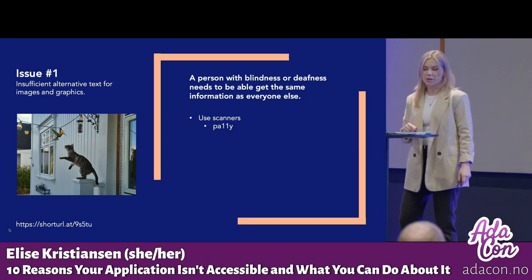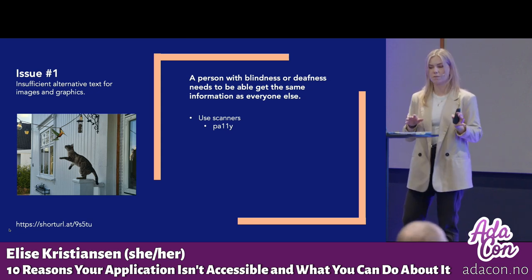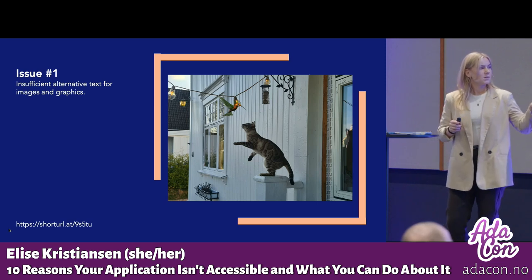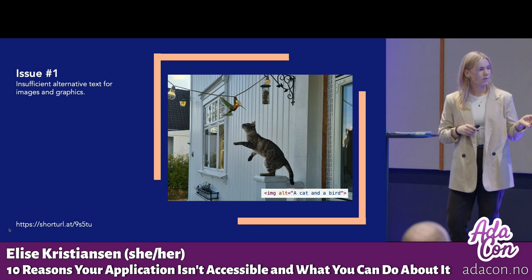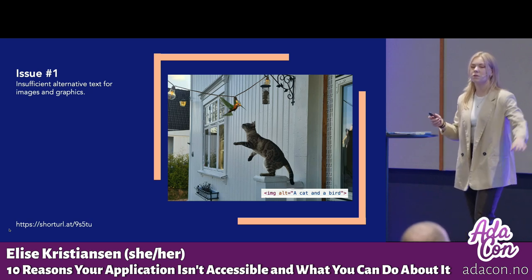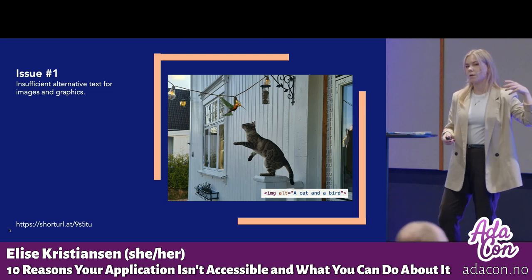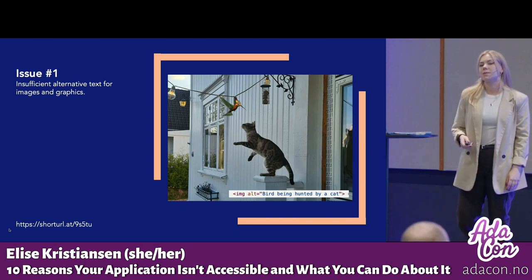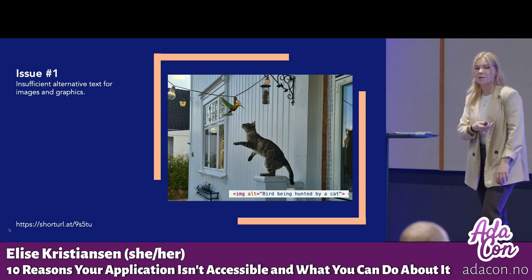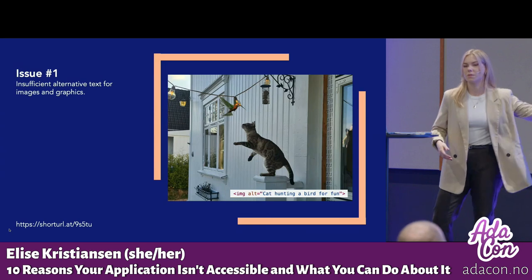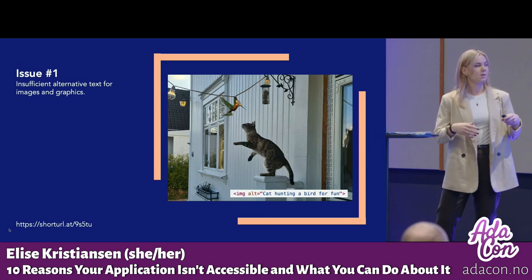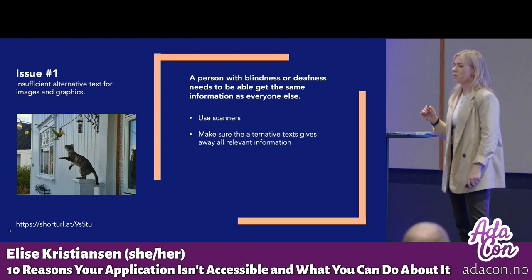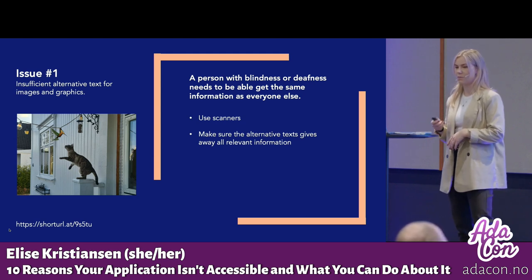A scanner will tell you if an image lacks any text alternative at all, but it might not recognize whether the alternative text provides enough context. For example, an image of a cat trying to catch a bird might just be described as 'a cat and a bird,' which gives no context. For an article about endangered birds, the alt text should be 'bird being hunted by a cat,' while for an article about cat behavior it might be 'cat hunting a bird for fun.' Make sure all multimedia elements have text alternatives that give all the relevant information for the context.